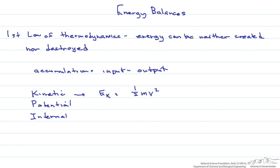Sometimes you'll see instead of v, you'll see a u. Potential energy is the energy caused by a change in elevation. We write this as m g z, where m is the mass or mass flow rate, g is the gravitational acceleration, and z is the height of the object or fluid above the reference height.